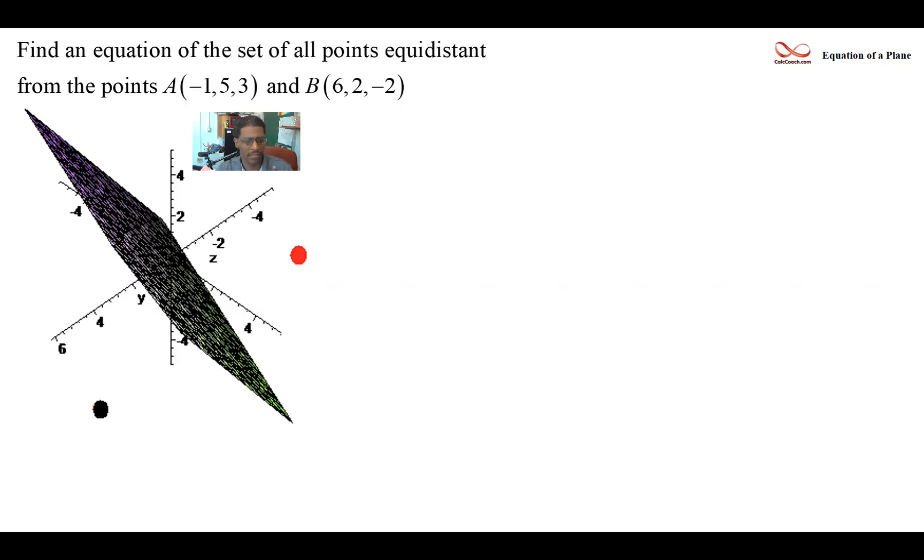Okay, so to define the equation of a plane, two things you need. The first thing you need is a point that's on the plane. Now to get a point that's on this plane, what we can do is find the midpoint of the line segment that connects these two points. Guaranteed to be on the plane.